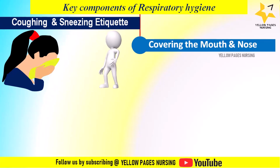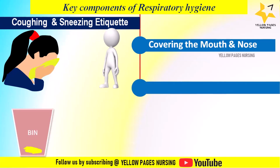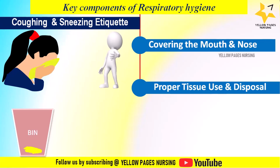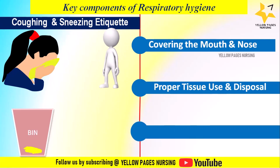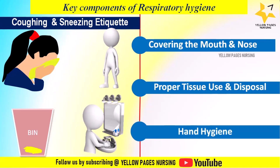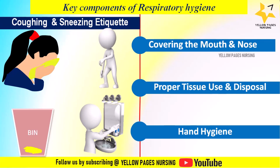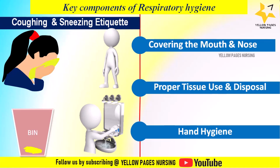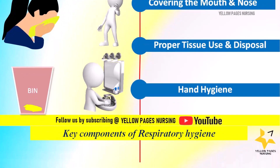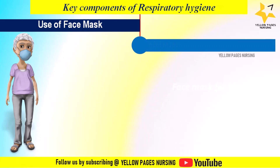The next component is proper tissue use and disposal — dispose of used tissues immediately in a closed bin. Following that is hand hygiene: wash hands thoroughly with soap and water, or use an alcohol-based hand sanitizer after having contact with respiratory secretions.